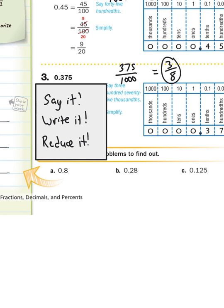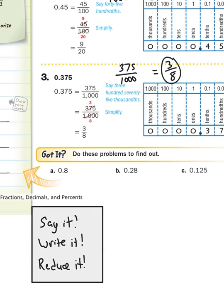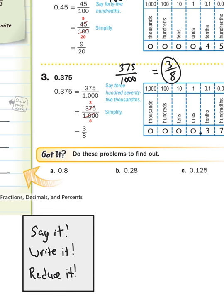We're going to go down and try A, B, and C. I'm going to keep these steps right here because you're going to pause the video in a second. Your job is to pause the video and do A, B, and C. Do all three. When you're done, hit play and go over the answers with me on the video and make sure you fix any mistakes. Remember the steps: say it, write it, reduce it. You could use your calculator. Pause the video now and go.